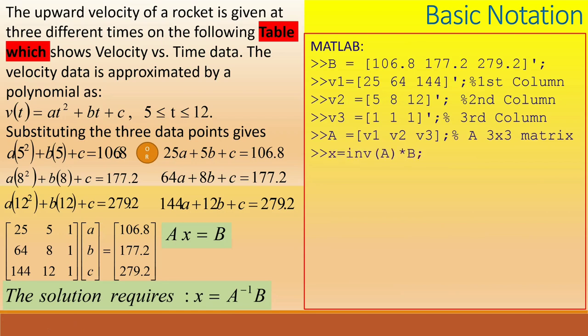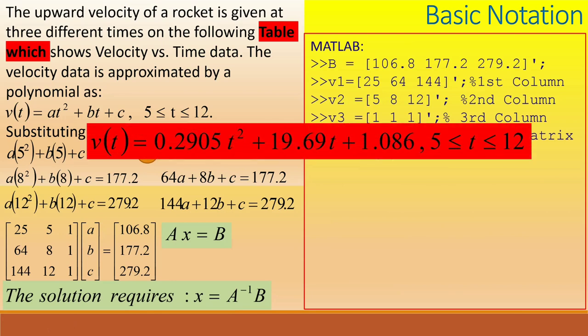We can find the unknowns vector x using the inverse of A and then multiplying with vector B. We find that A equals 0.2905, B equals 19.69 and C equals 1.086. After knowing the unknowns, we can simply use a polynomial by putting the values from vector x. We can set a time array with difference of half second between 5 and 12 seconds using the colon operator. We can use the values of unknowns stored in vector x and calculate the velocity using a single polynomial v(t).